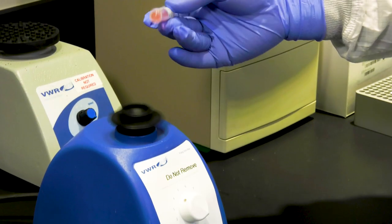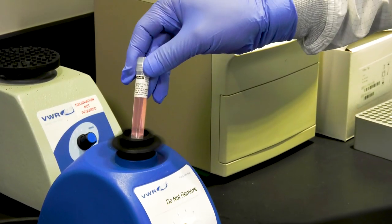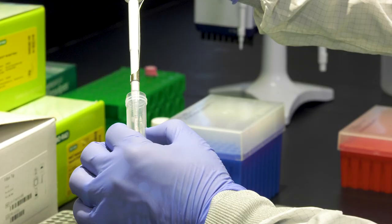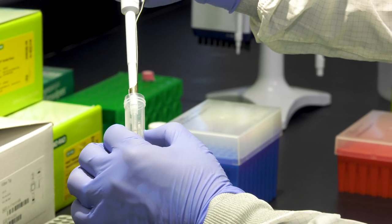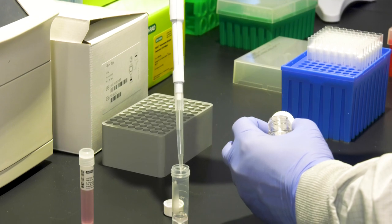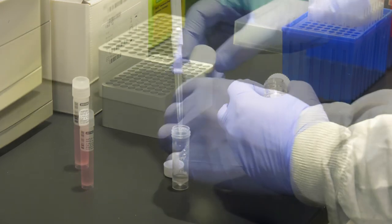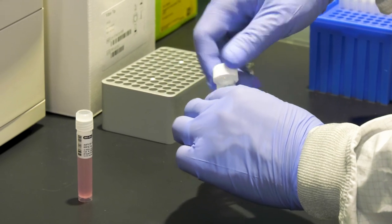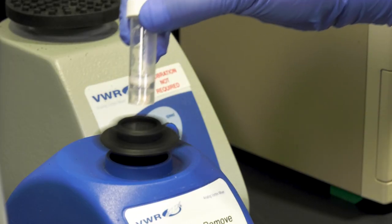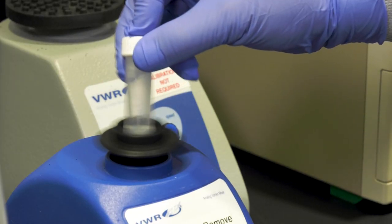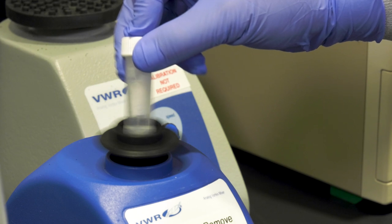Next, vortex your assay and add it and an appropriate amount of nuclease-free water to the tube. Cap the tube and vortex it thoroughly for 5 seconds at maximum speed so that it's homogenous.